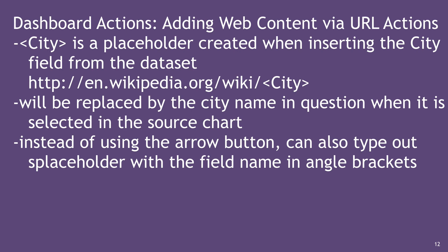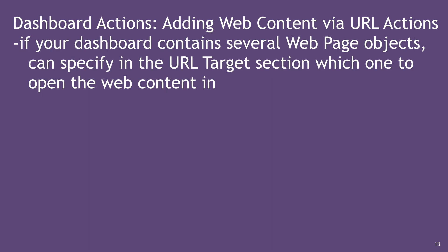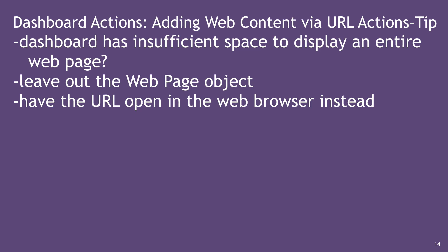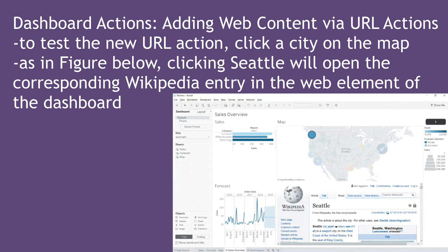The placeholder will be replaced by the city name in question when it's selected in the source chart. Using the arrow button, you can also type out placeholders with the field name in angle brackets. If your dashboard contains several web page objects, you can specify in the URL Target section which one to open the web content in. As a tip, if the dashboard has insufficient space to display an entire web page, leave out the web page object and have the URL open in the web browser instead.